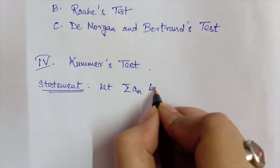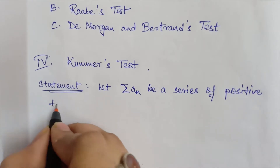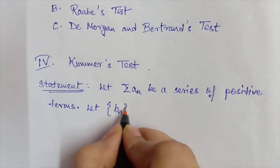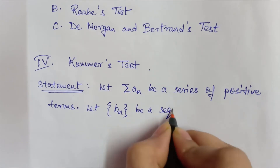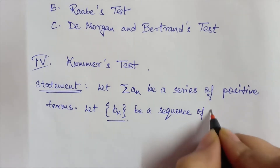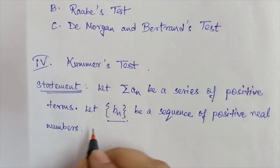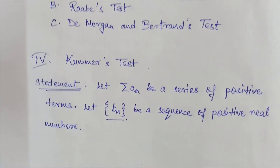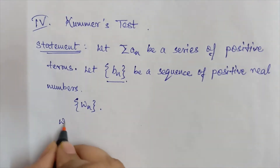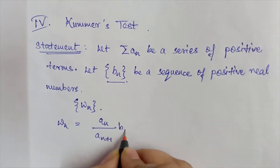Kummer's test states: let the summation of a_n be a series of positive terms, and let b_n be a sequence of positive real numbers. We now need to construct another sequence W_n, where W_n equals (a_n / a_{n+1}) * b_n minus b_{n+1}.